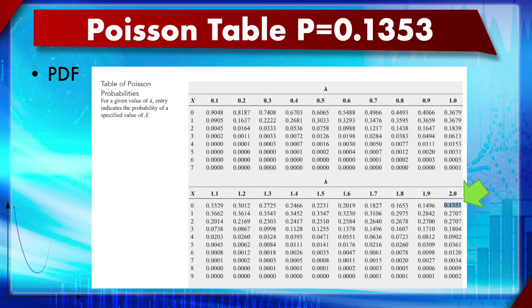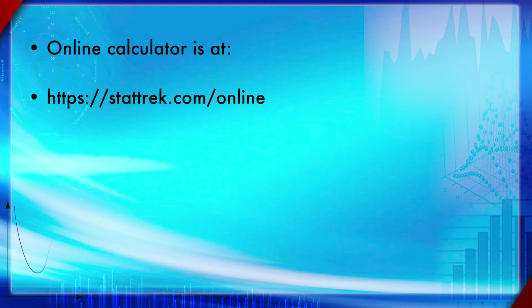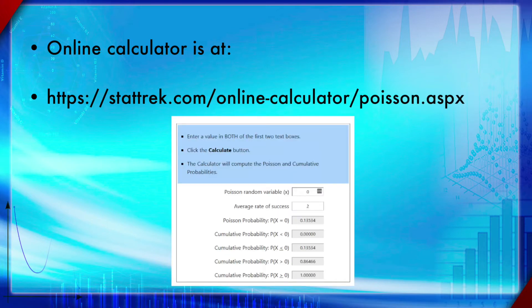Poisson tables are also available. Once you calculate lambda, just pick the probability from the Poisson table. You can either use the equation or the table to get the exact probability. The probability in this example is 0.1353 as found in the table. More useful is the online Poisson calculator - just input the event average rate and the other parameters. Online calculators use the same equation. One such calculator is linked on the website.